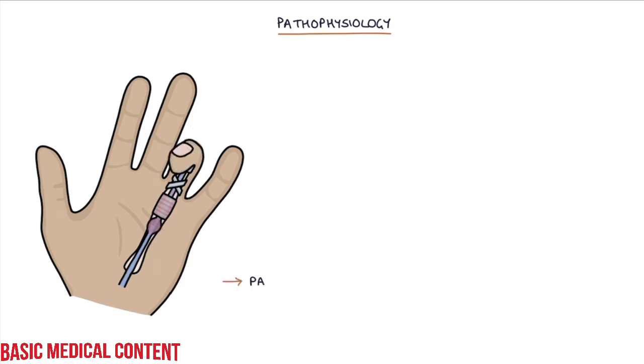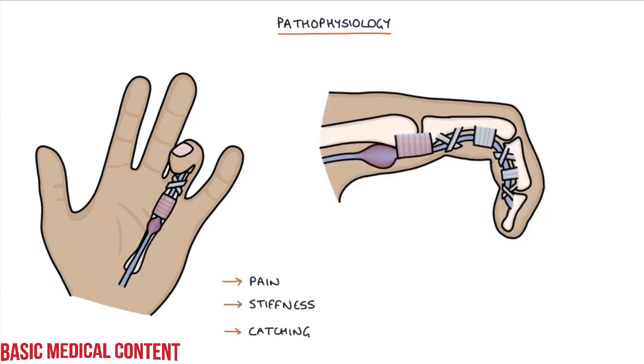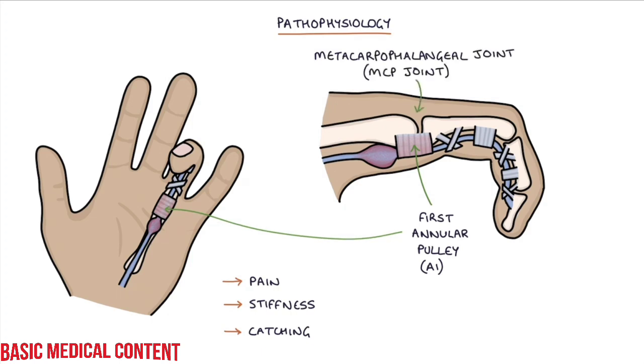This results in pain, stiffness, or a catching symptom. The most commonly affected part of the sheath is the first annular pulley called A1, which is at the metacarpophalangeal joint or the MCP joint. There may be a nodule on the tendon.